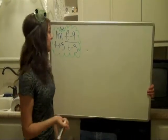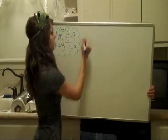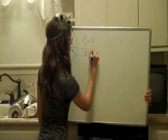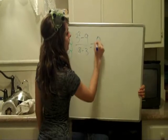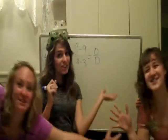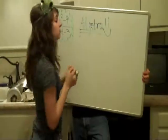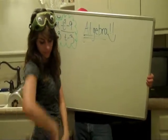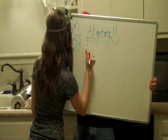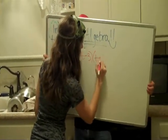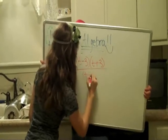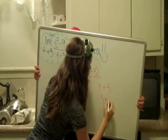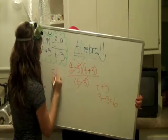Now we're going to solve a problem analytically. Plug in 3 for T, and you get 0 over 0. What does that mean? Algebra! We don't want red to be left out here. So the limit equals 6.